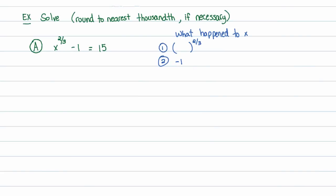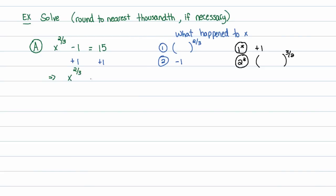I'm going to undo those things in reverse order — like untying a knot. The last thing done to x was subtracting 1, so I'll undo that with addition. The inverse operation to raising something to the 2/3 power is raising it to the 3/2 power. Those are my inverse operations. Adding 1 to both sides gives me x to the 2/3 equals 16.